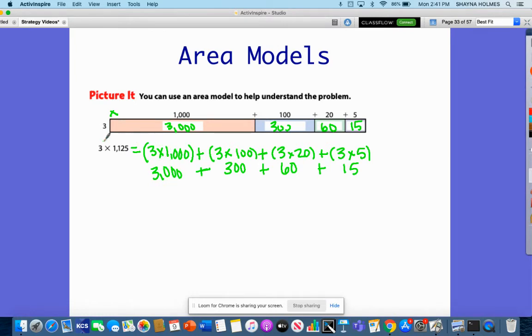This is the product of the 3 in the thousands, my 3 in hundreds, my 3 in tens, and 3 in ones. So 3,000 plus 300 gives me 3,300. Plus I'm going to add 60 and then 15, so that's plus 75. That gives me 3,375.